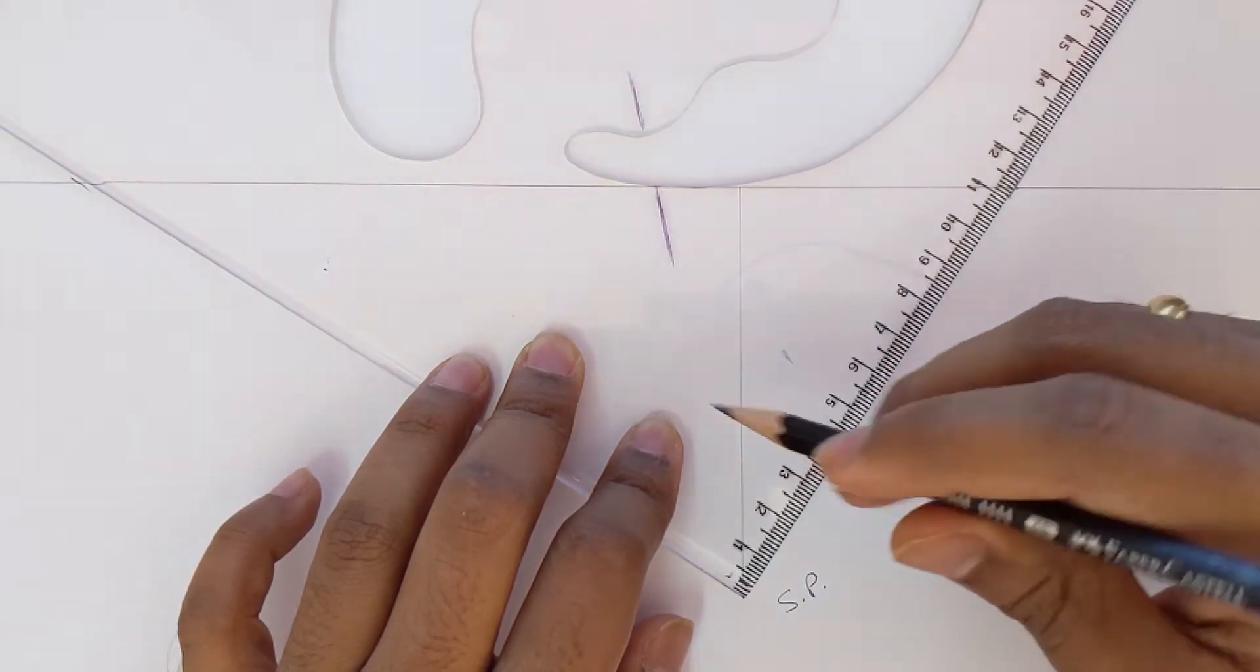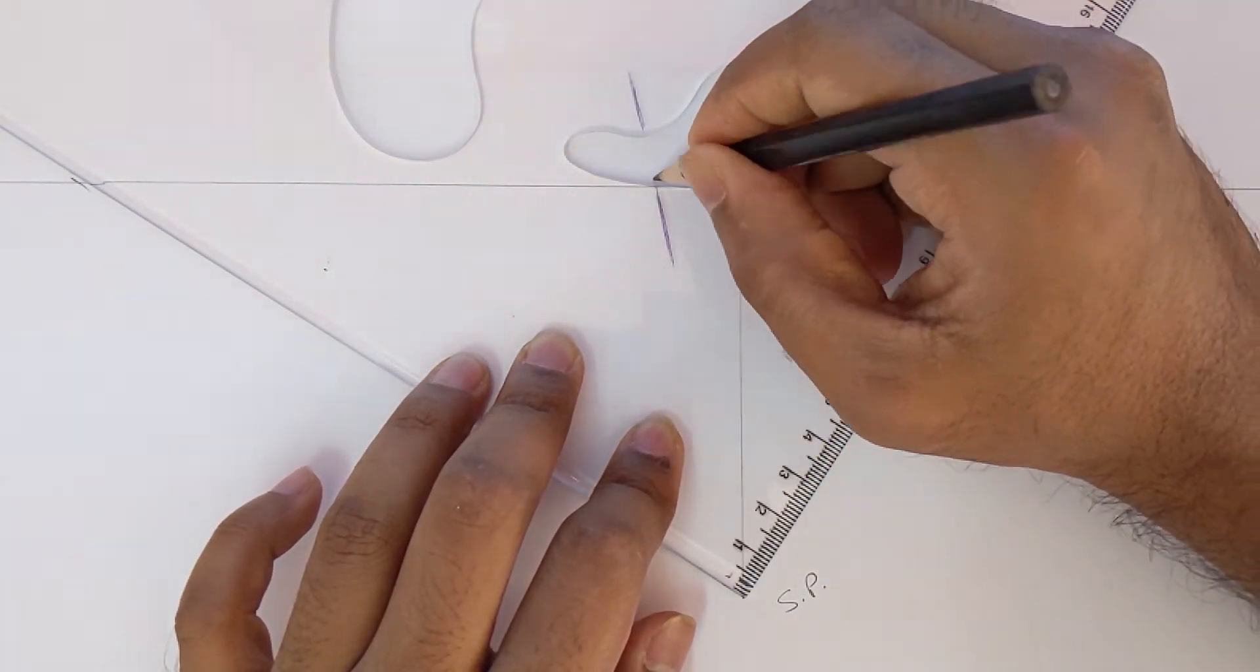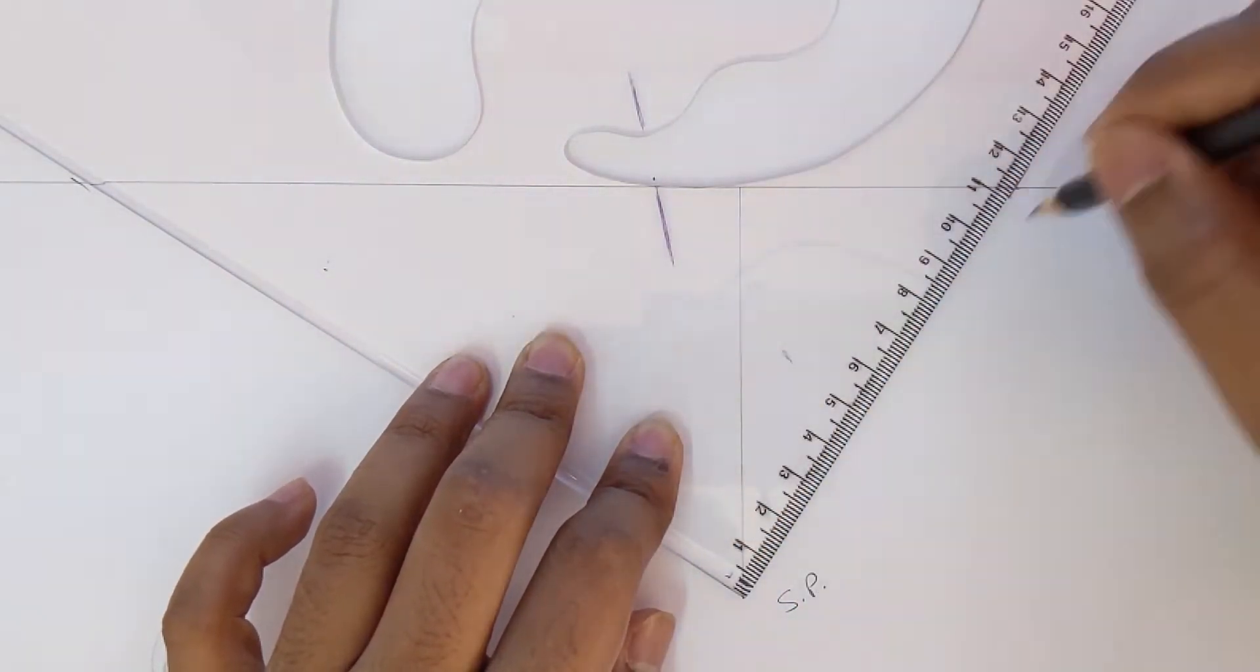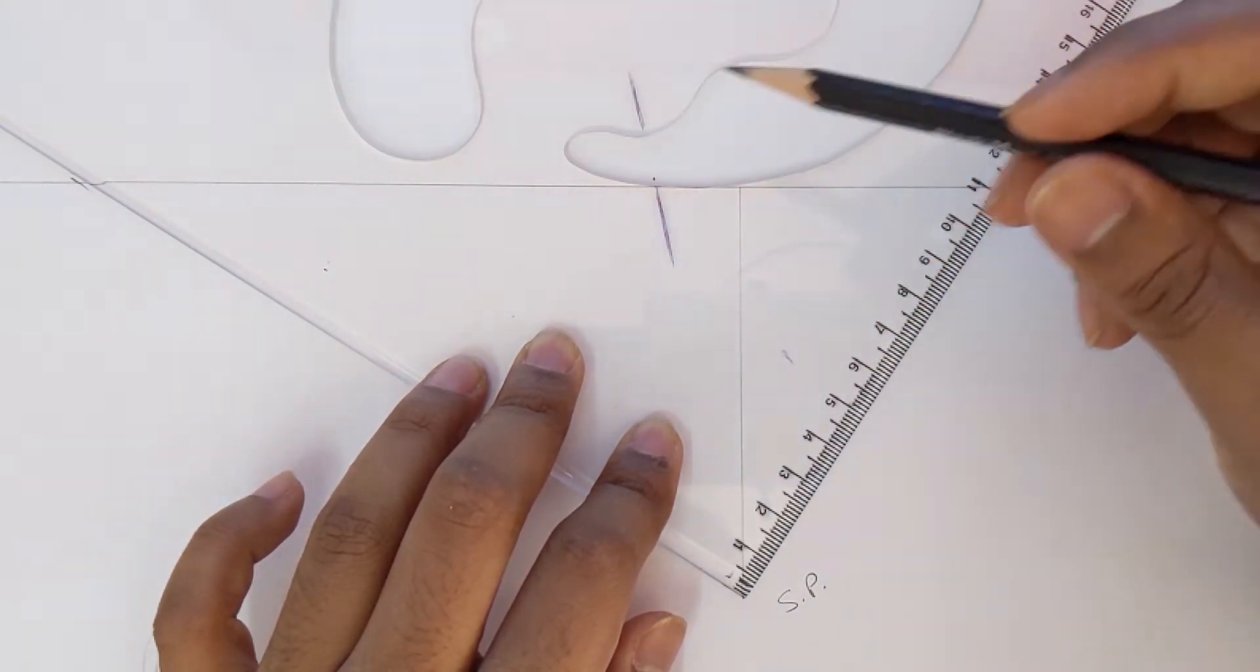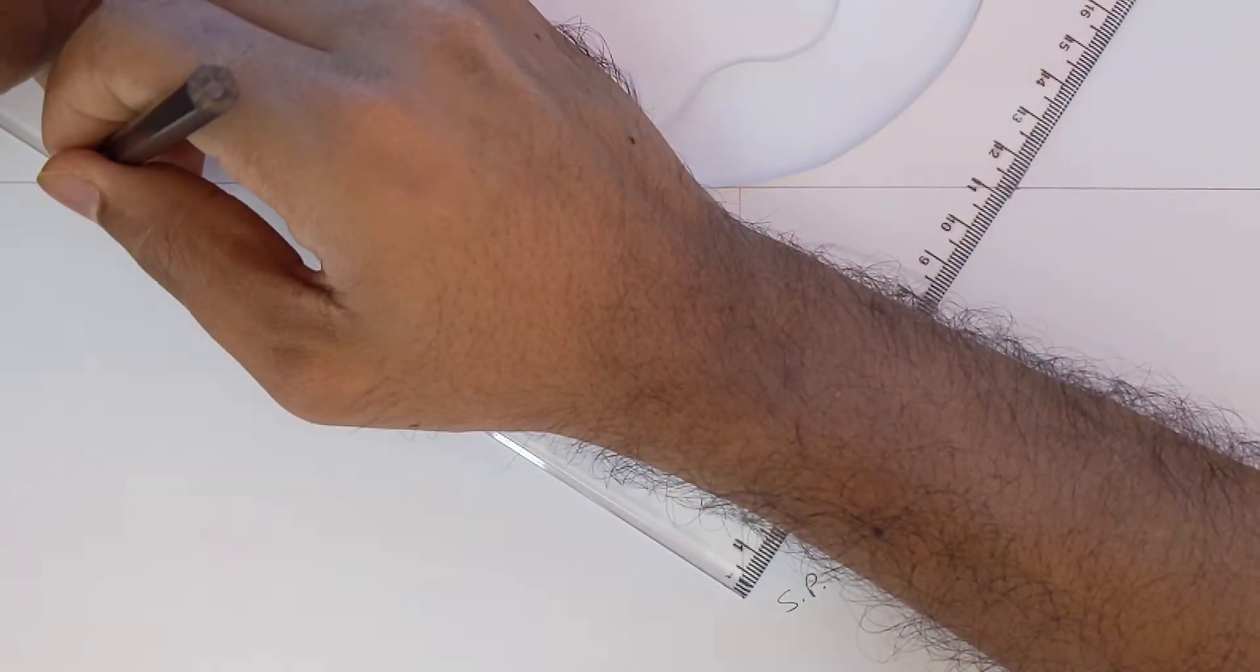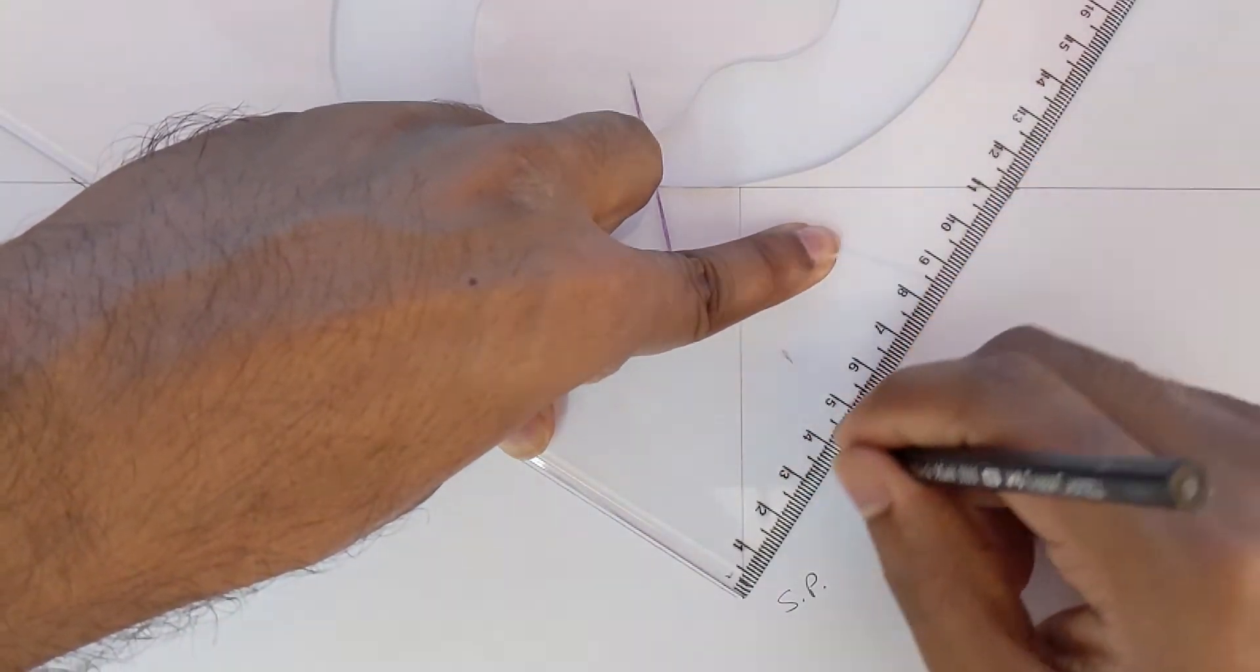Now the next step would be to mark a point which is at 45 degree angle from these two lines. I don't have a protractor here, so I'm just improvising by marking this line at the center of a 90 degree set square. We'll just go ahead and draw these lines to the vanishing points.